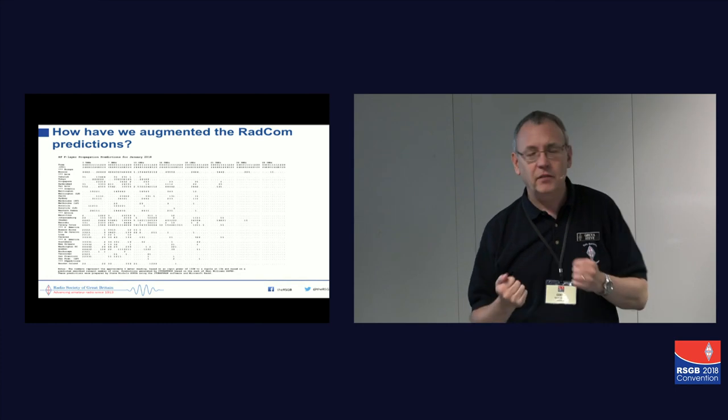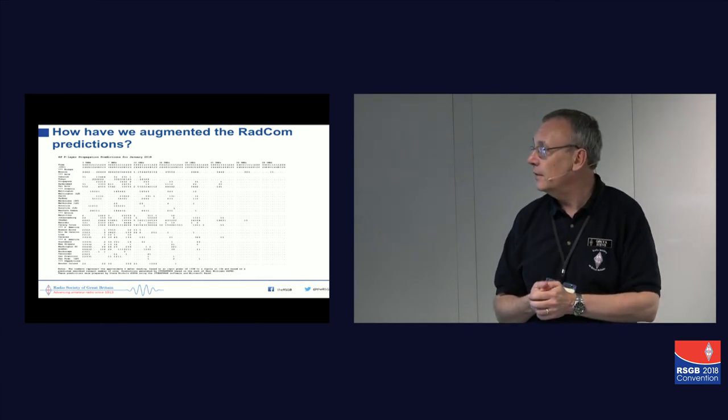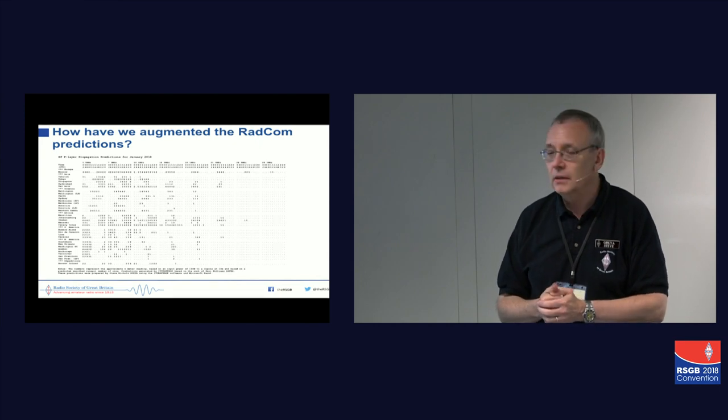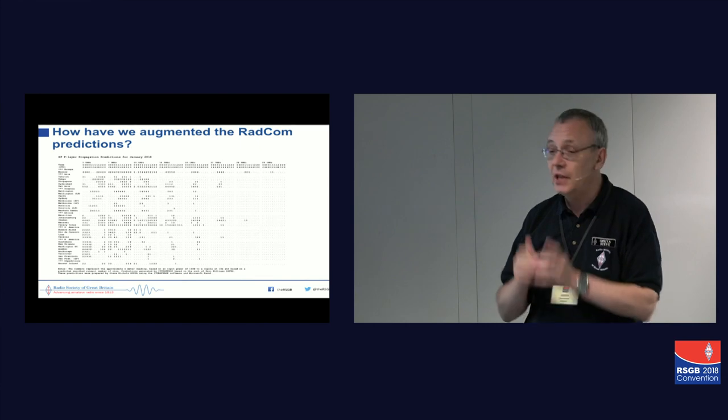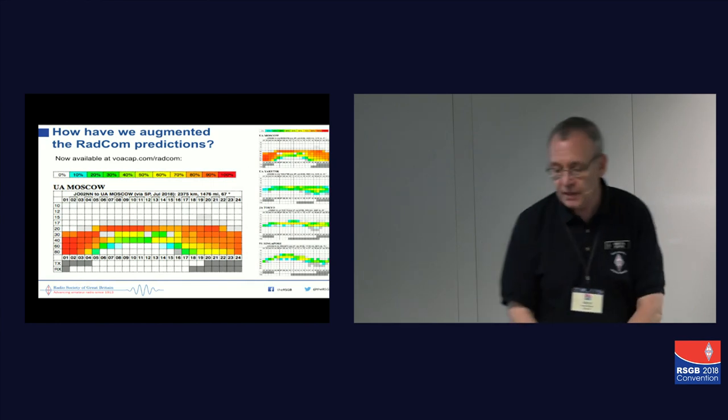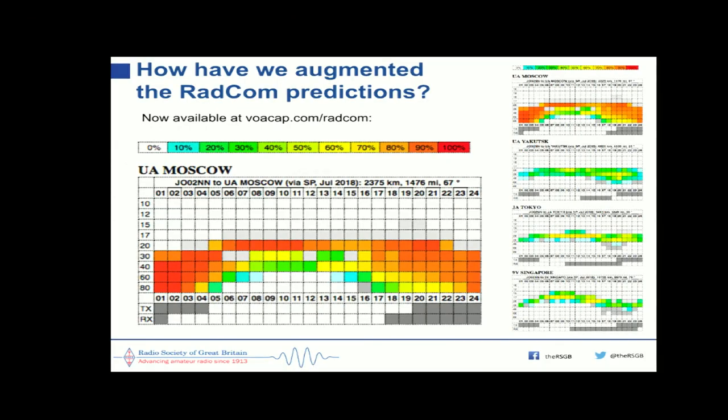So I thought the best thing to do was actually with technology now is actually have an online facility that you could use to augment these where you put in your power, you put in your own antenna system, and it will give you your own results for your particular station. And I had this in mind for about six months or so, and we were looking for a programmer who could do this. And it was Michael VJR, G7 VJR, who suggested somebody called YARI, or YARI-OH6BG. And so I contacted him, and he said, what do you want? So I said, what would it be nice to do is have the same locations we have in RADCOM, but you put in your power, your antenna, whatever. And he said, let me think about that.